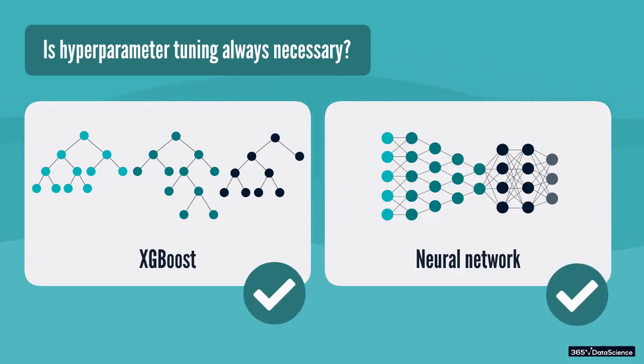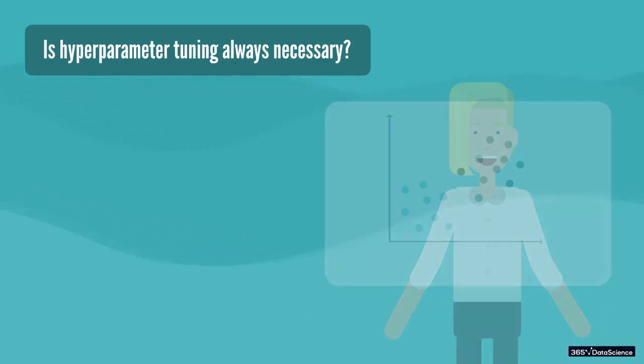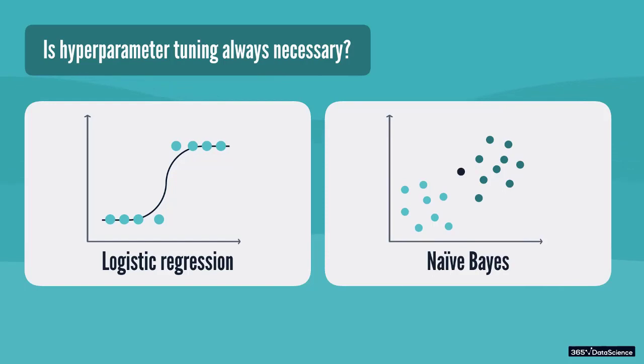Of course, if we are dealing with an algorithm that does not have a lot of parameters which can be optimized, as in the case of a logistic regression or a naive Bayes algorithm, then cross-validation might not be necessary, simply because we don't have a lot of parameters to optimize.